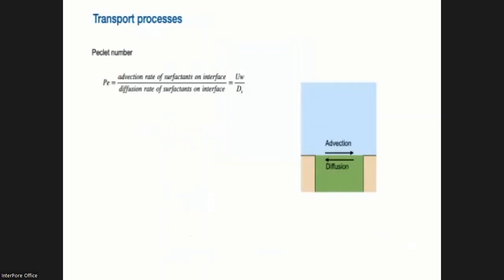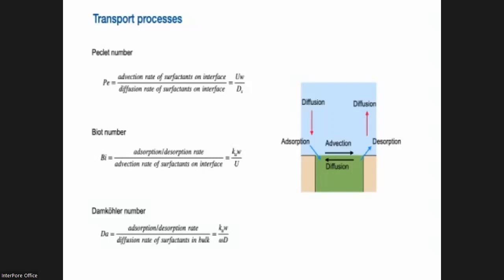So one thing we have assumed so far is that there is a concentration gradient. However, of course, this concentration gradient arises because of transport processes. So we have to take into account different transport processes as well through a non-dimensional number. So we can look at the Peclet number here, which is basically the advection rate on the interface over the diffusion rate on the interface of surfactants. We can look at the Biot number, which is the advection on the interface over the adsorption and desorption rate. And we also have the Damköhler number, which is the adsorption and desorption rate over the diffusion in the bulk.